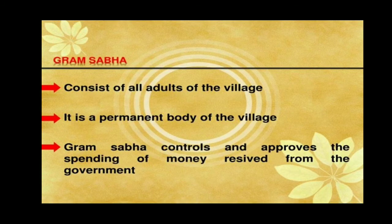Gram Sabha consists of all adult members of the village. It is a permanent body of the village. Gram Sabha controls and approves the spending of money received from the government. It means the Panchayat works under the overall supervision of Gram Sabha. All the voters in the village are its members. It has to meet at least twice or thrice in a year to approve the annual budget of the Gram Panchayat and to review the performance of the Gram Panchayat.